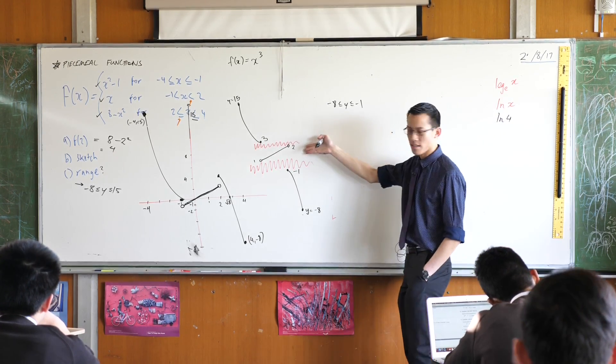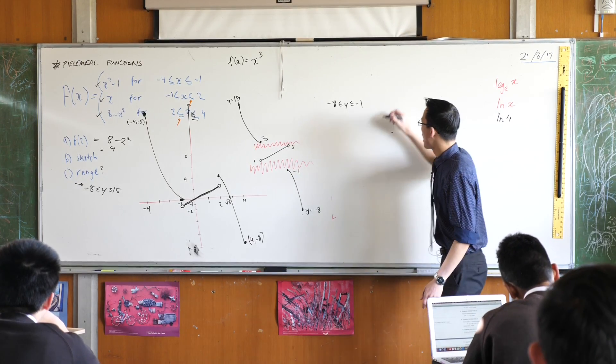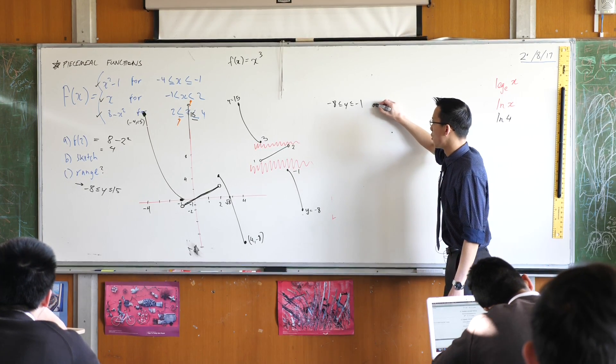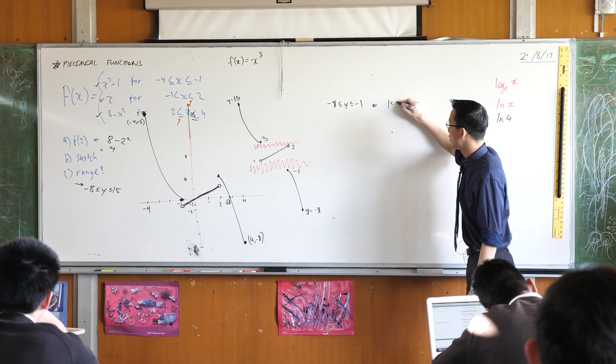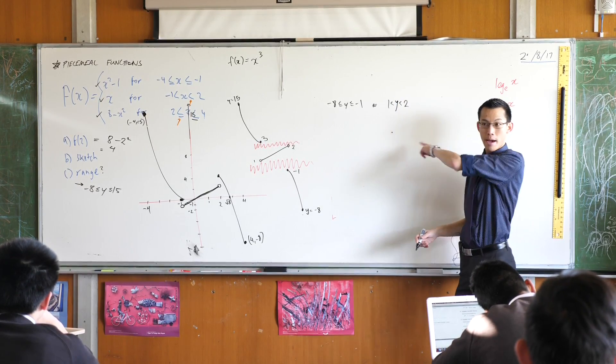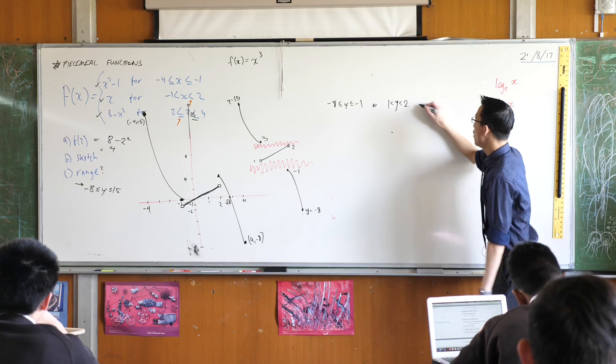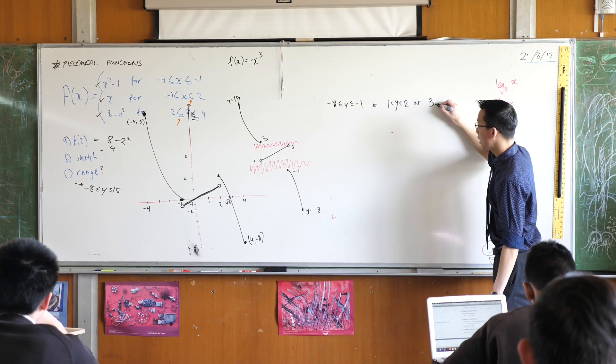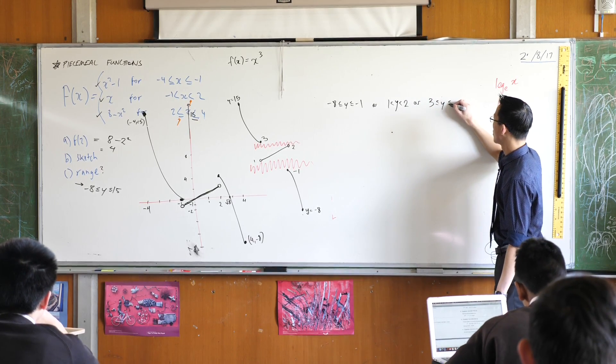But in addition to that, I have to say this, and I have to state it separately. So I would have to say, or 1 to 2, and I don't have my boundaries there because they're hollow circles, or 3 inclusive to 15.